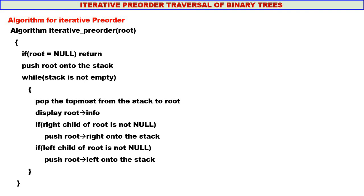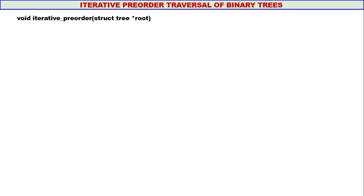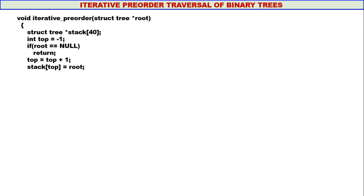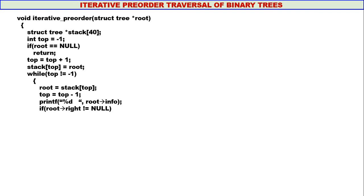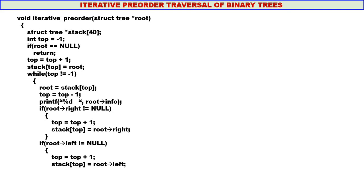The algorithm is quite simple for iterative pre-order. Now let us look at the function in C. Top is initialized to minus one, stack of size 40. If root equals null, return. Push root onto the stack. While top is not equal to minus one — that is, while the stack is not empty — pop the topmost element, display it. If root's right is not null, push root's right. If root's left is not null, push root's left. That's all for iterative pre-order.